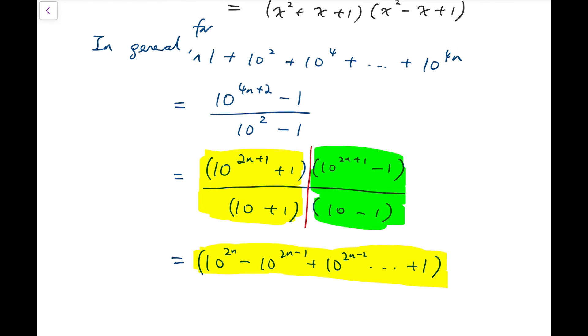Well for the green fraction, it's multiplied by 10 to the 2n plus 10 to the power of 2n minus 1 plus 10 to the power of 2n minus 2 all the way down to plus 1. And this is again an integer.